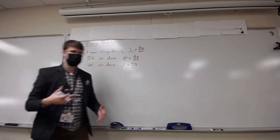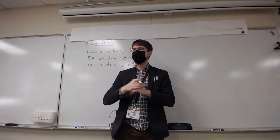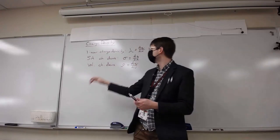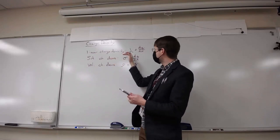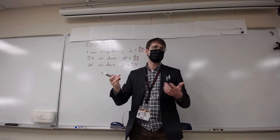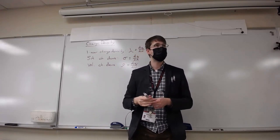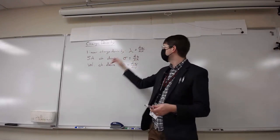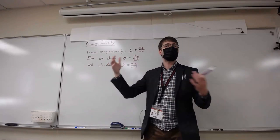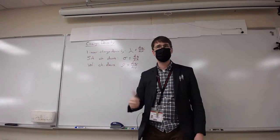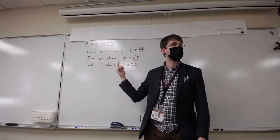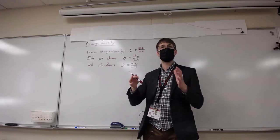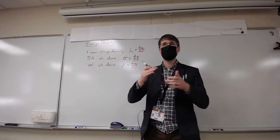The first thing we'll start with is a solid disk of charge — a disk that has charge all throughout it. We want to figure out the total charge on this disk, given the surface area charge density. These densities could be constants, and for most problems they will be, because that makes the math easier. But they don't have to be — they could be a function.